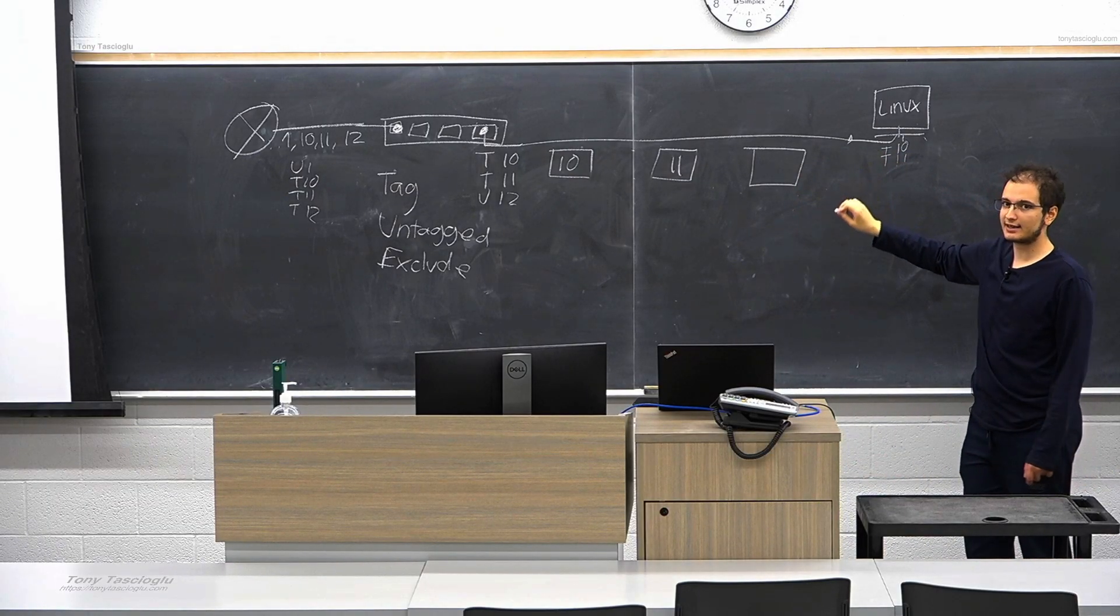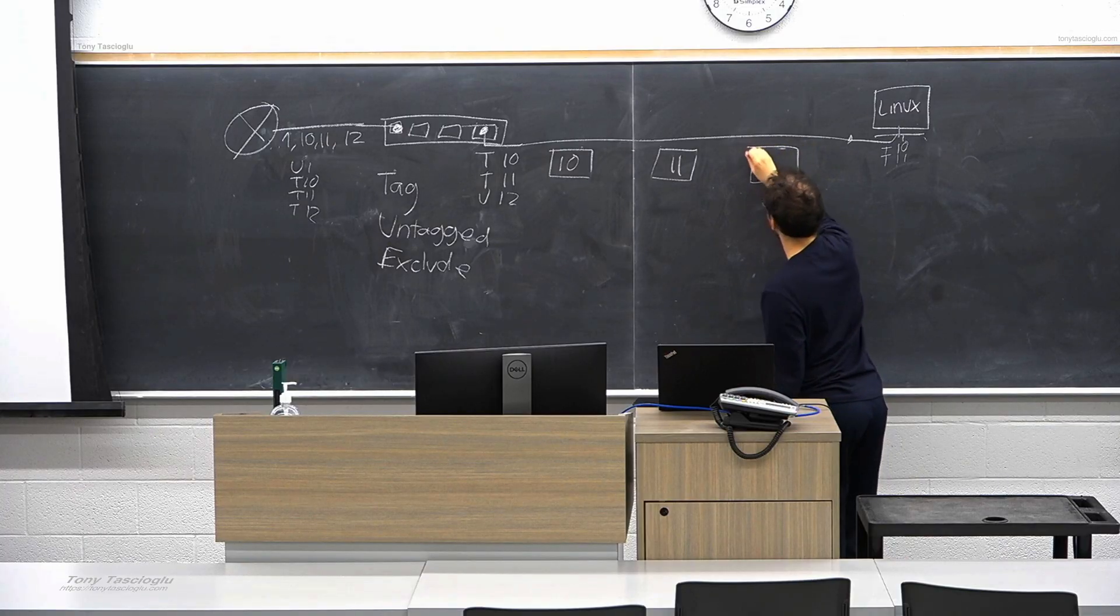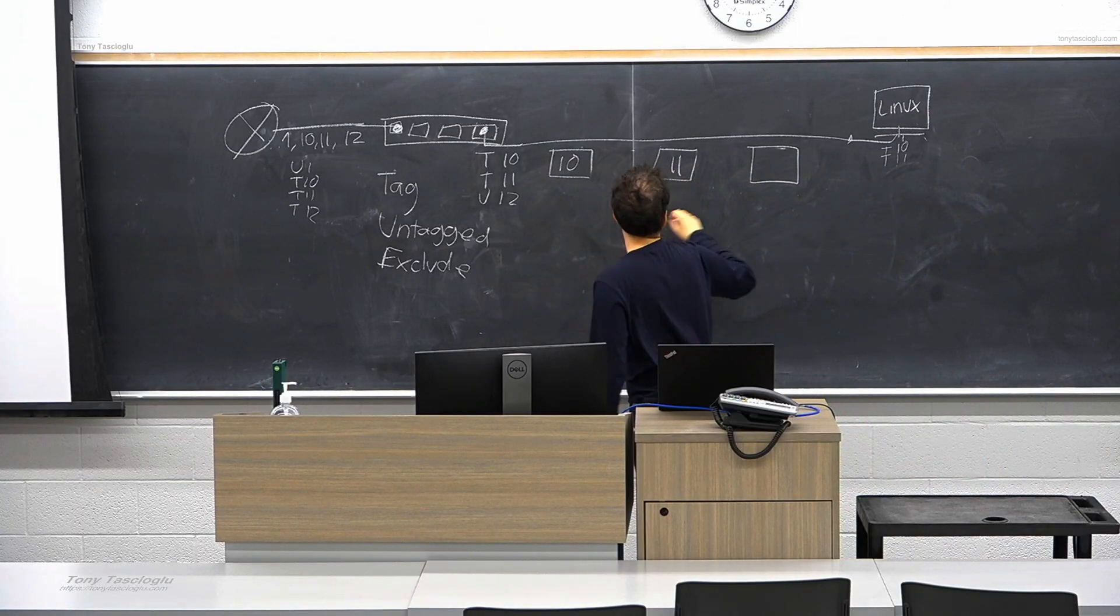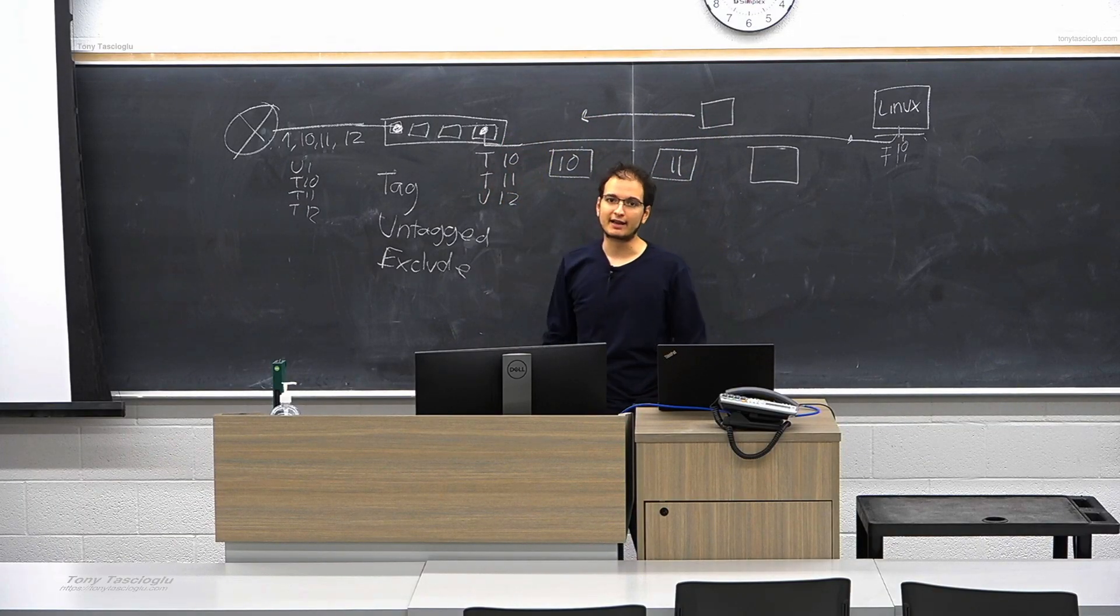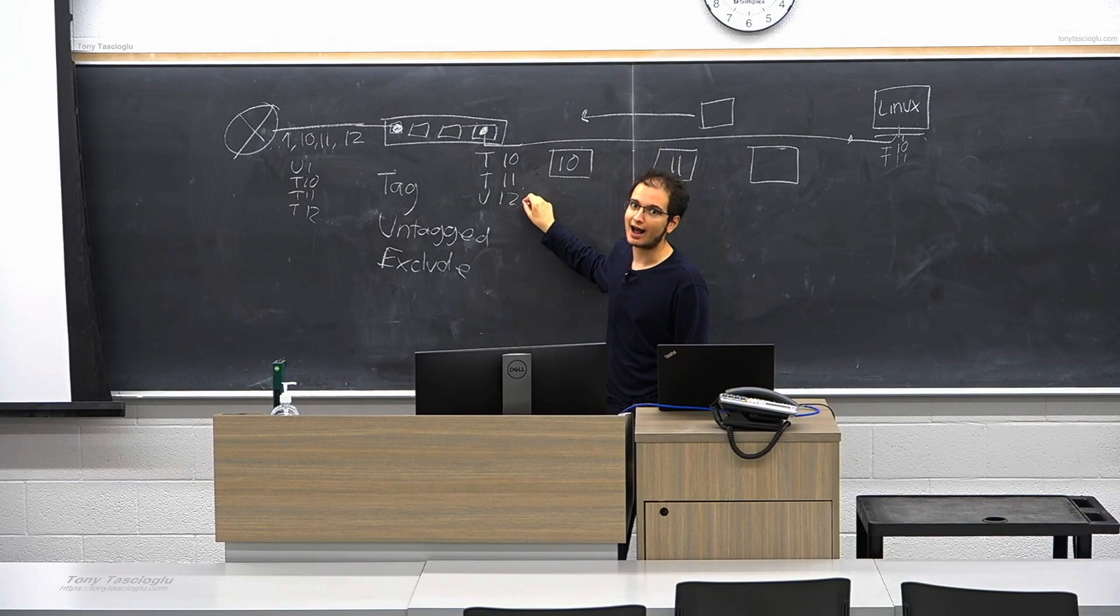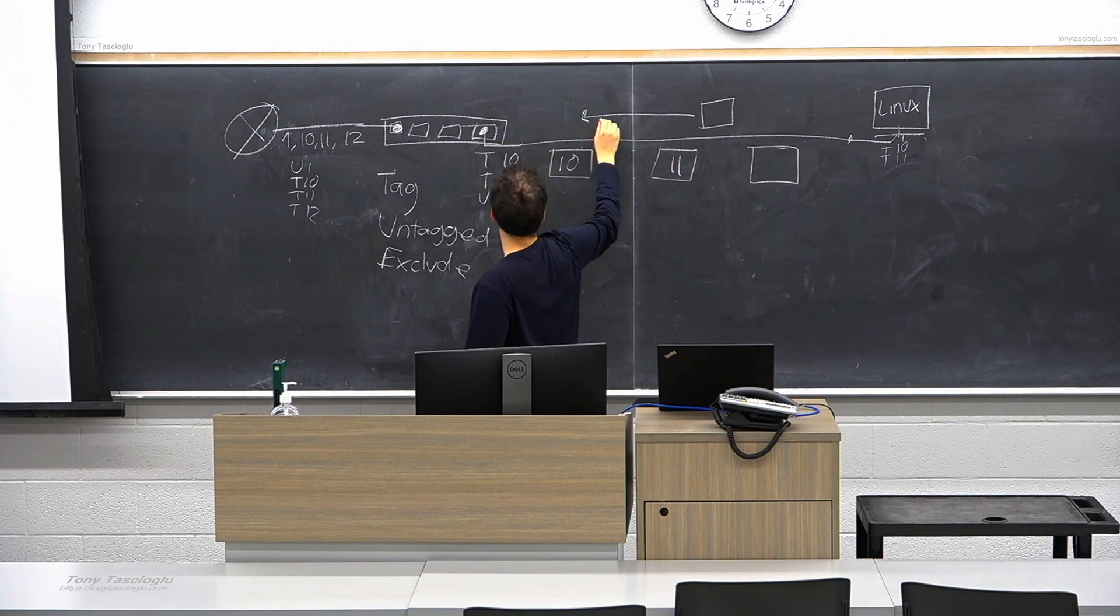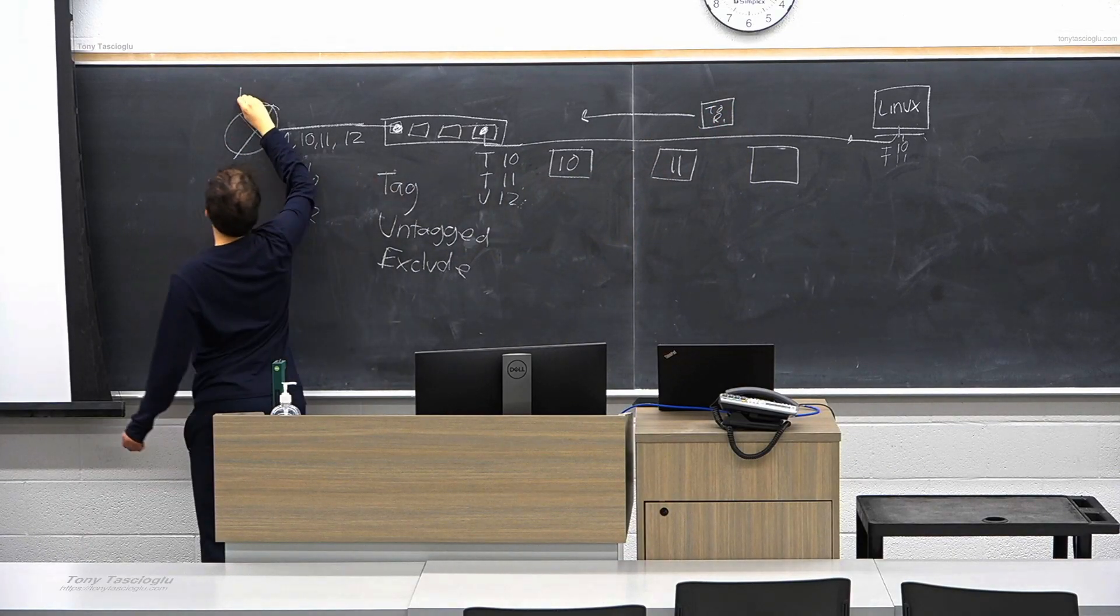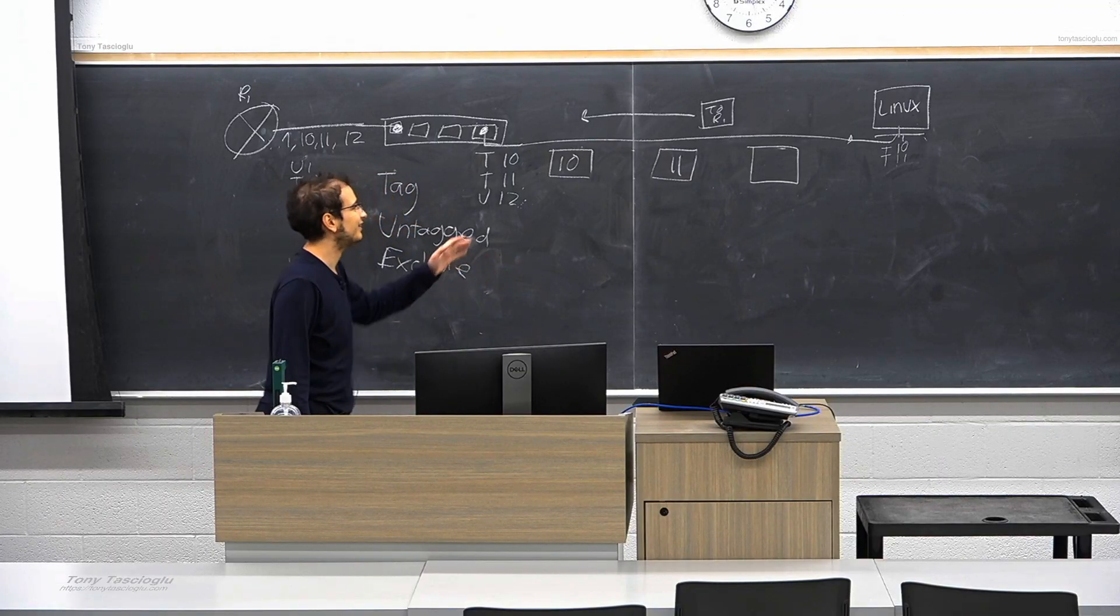Now where this gets more interesting is, say I don't want this computer on VLAN 1. Say this is like a Hikvision or Dahua camera, and I don't want it on the public internet for obvious reasons. You shouldn't put cameras on the public internet, they'll just get hacked. But instead, say we chose to untag 12 and keep 10 and 11 tagged. You can only have one untagged on the network.